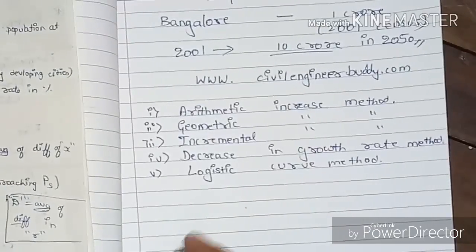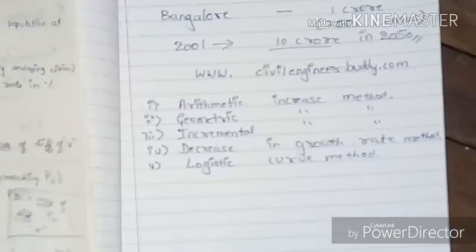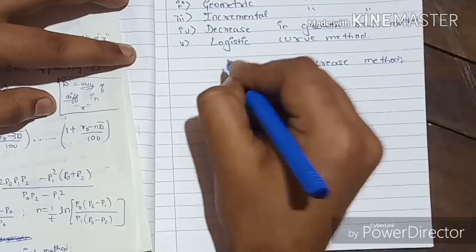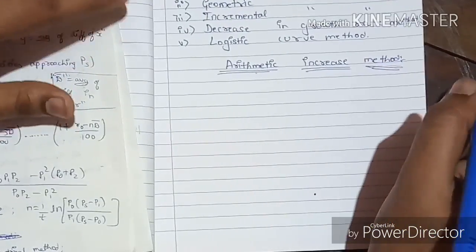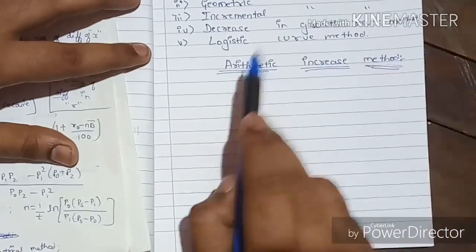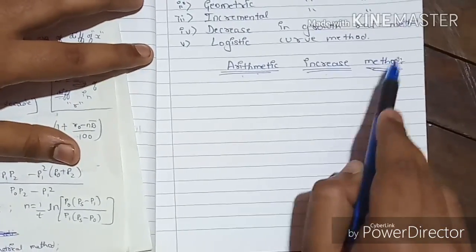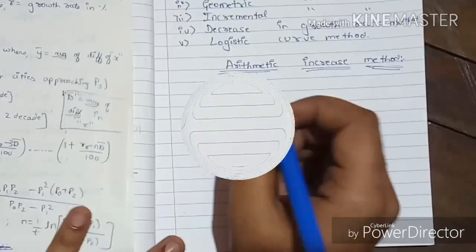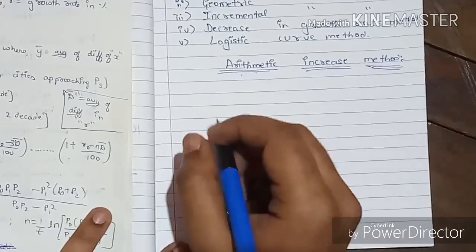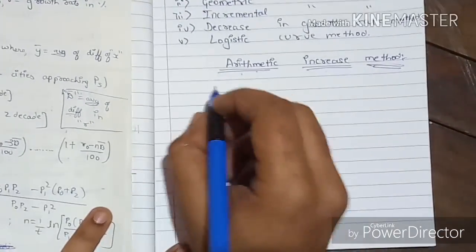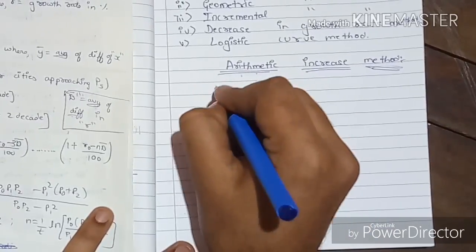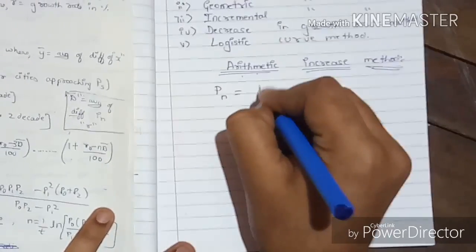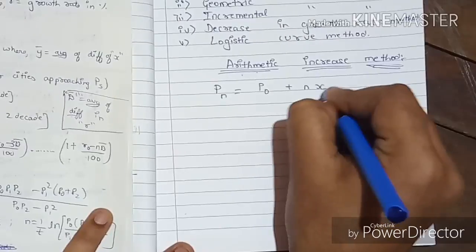Let's start with the arithmetic increase method. We will be solving problems using this method. The formula for arithmetic increase method is: Pn = P0 + n·X̄. If you remember this formula, it is sufficient.